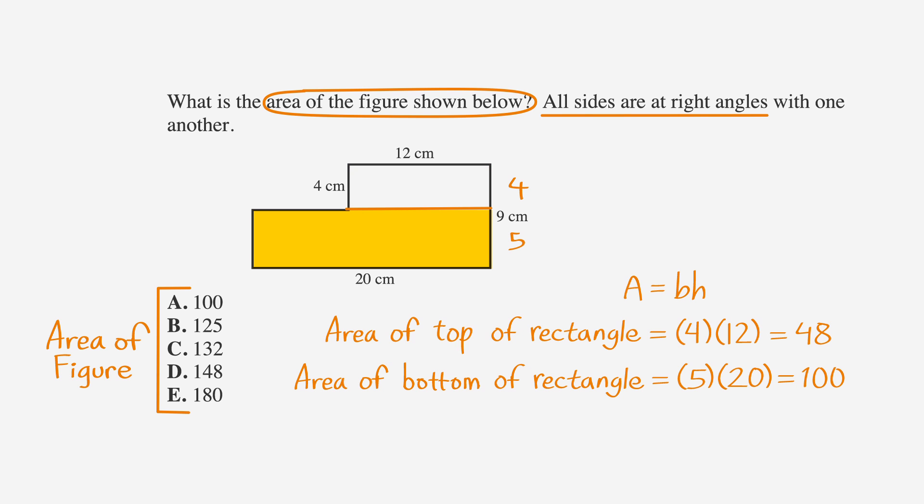To figure out the total area, we add our two separate areas to get 148. Answer D it is.